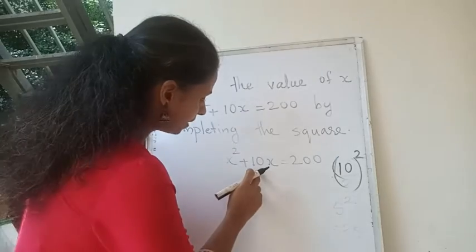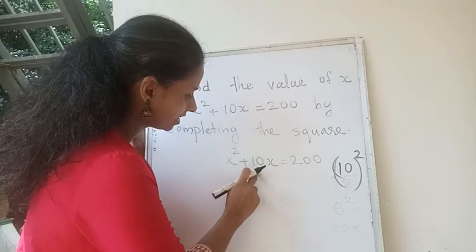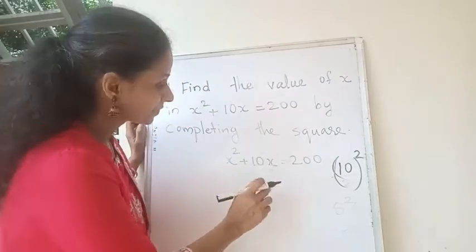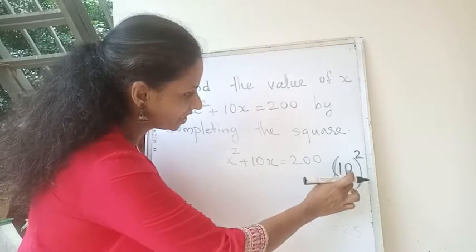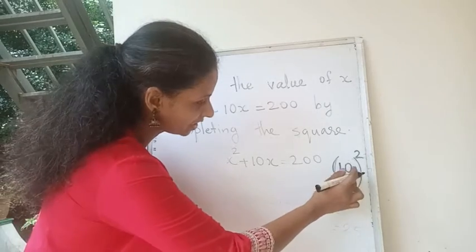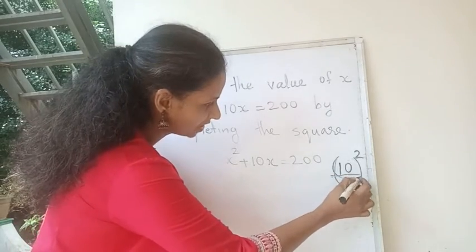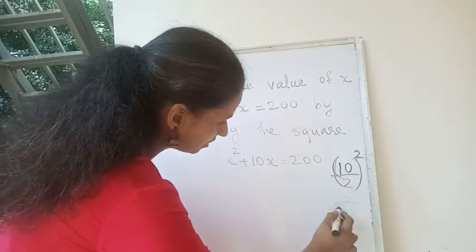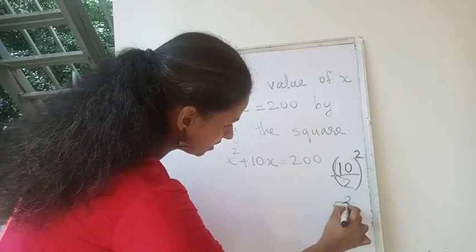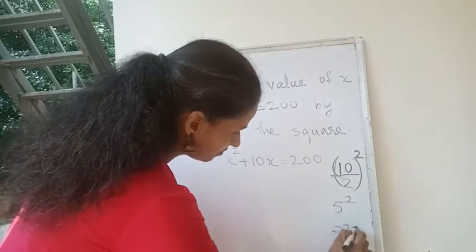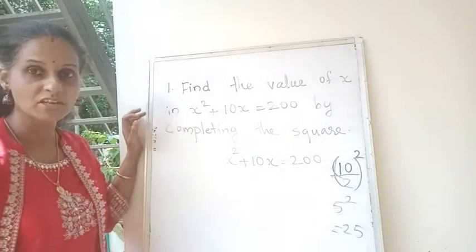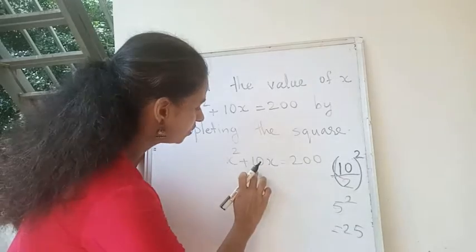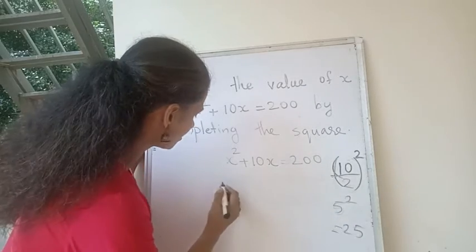We have to take the middle term, that is 10 — the coefficient of the middle term. Then 10 divided by 2, take 10 divided by 2, then square it. 10 divided by 2 is 5, then 5 squared is 25.